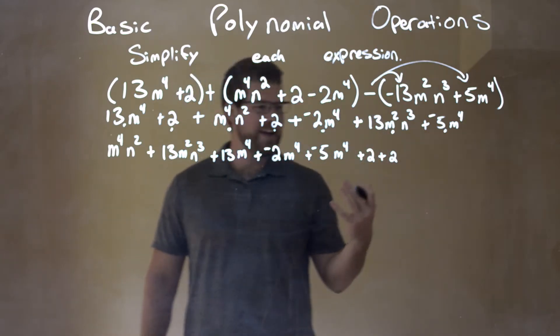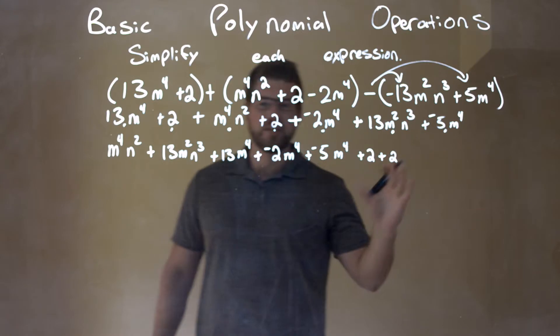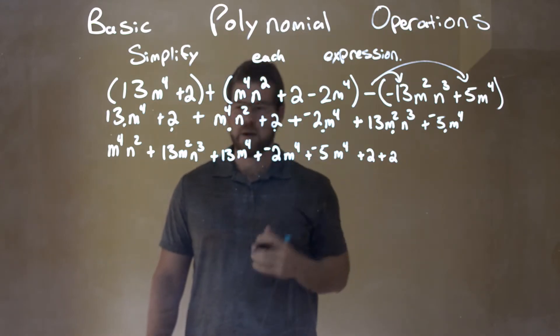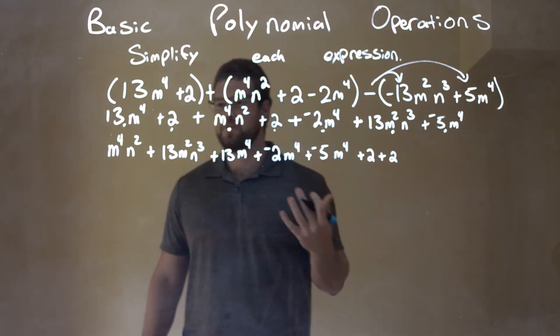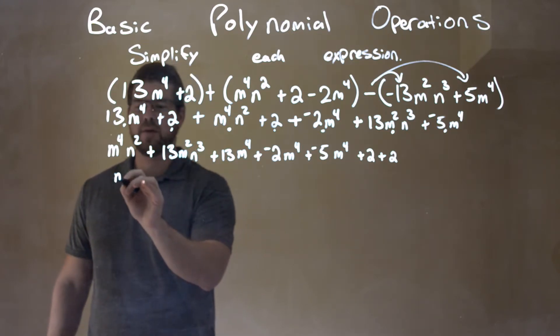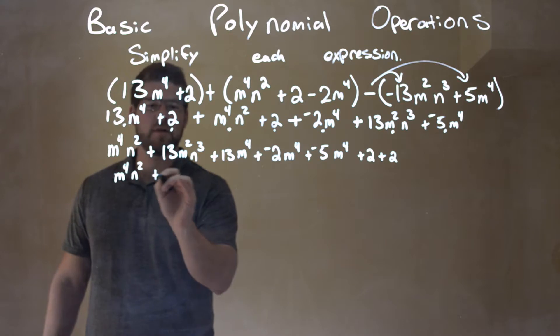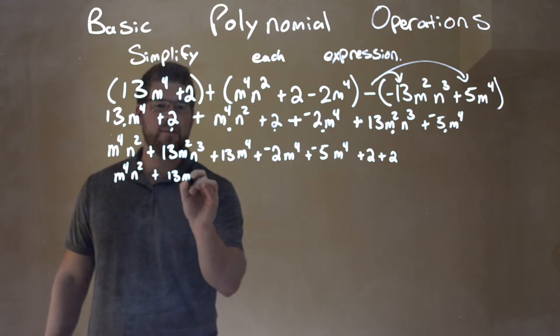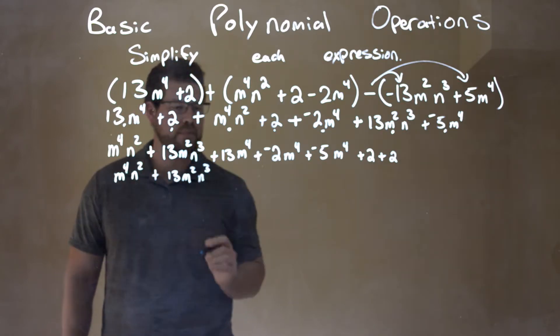Doesn't matter how fast you're doing to answer. If it's wrong, it's wrong. So you need to understand how to take your time through it. Now let's go simplify. Luckily, the first parts here have no like terms, so I'm going to bring that down. Just m to the fourth n squared plus 13m squared n to the third.